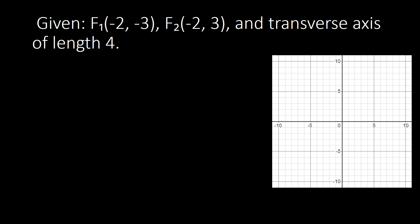Our second example has a focus at (−2, −3) and another focus at (−2, 3), with a transverse axis of length 4. Let's plot focus 1 at (−2, −3) and focus 2 at (−2, 3) on our graph. The transverse axis has length 4, and since the length of the transverse axis equals 2A, we divide by 2 to get A equals 2.